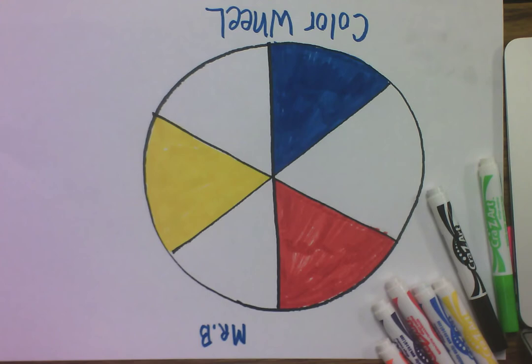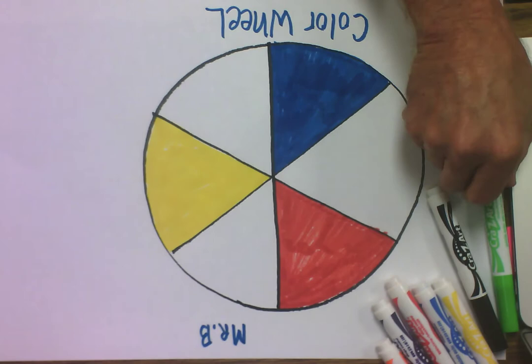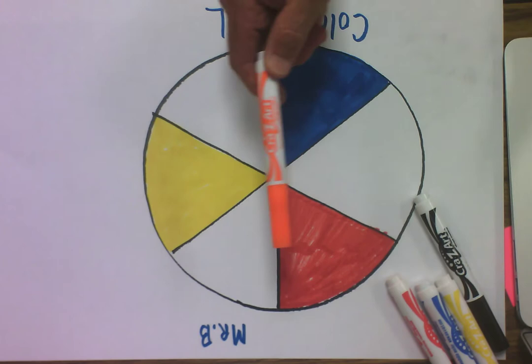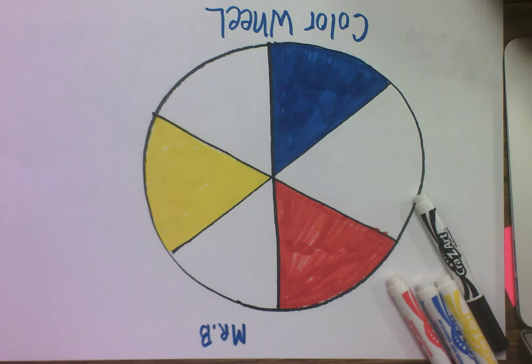Now, if you have paint at home, I suggest that you get three more colors. That would be orange, purple, and green.